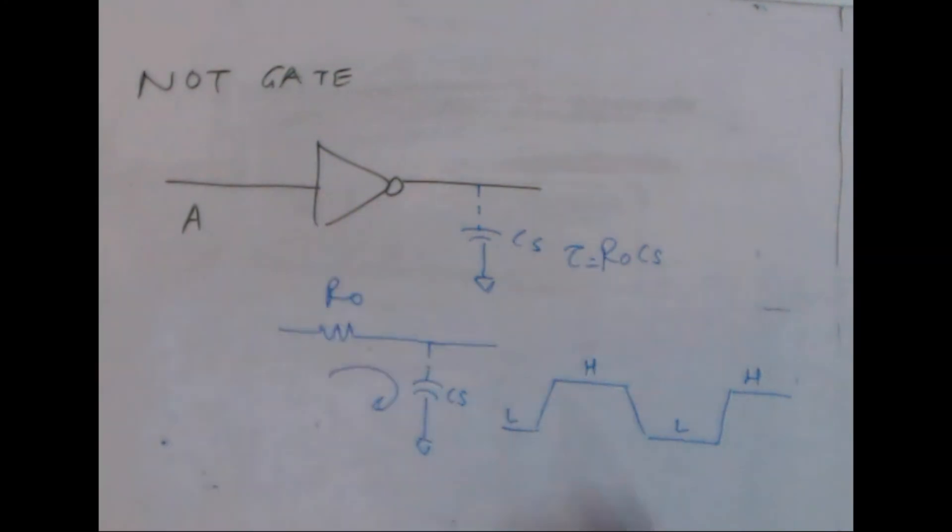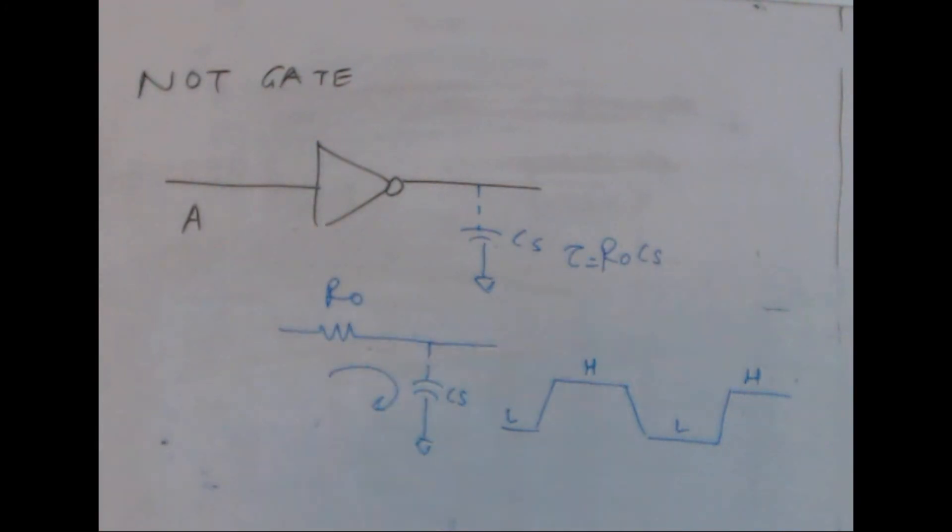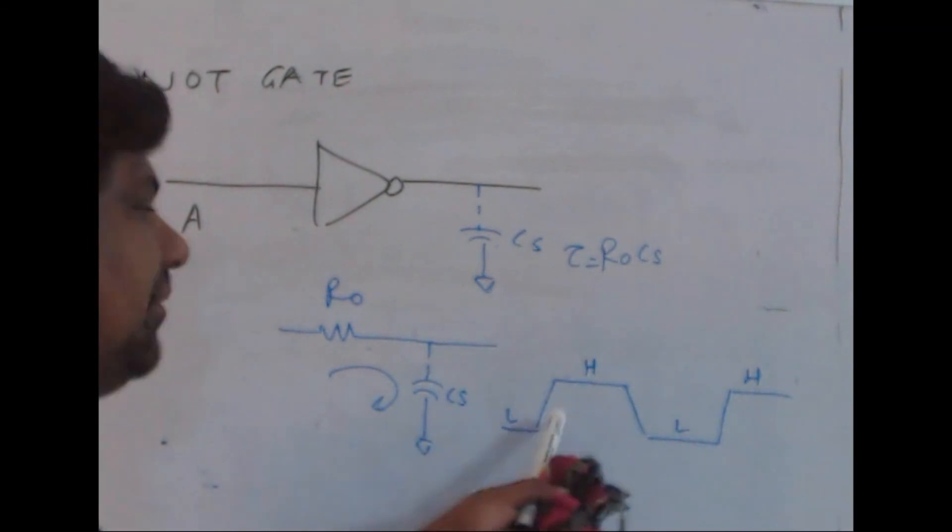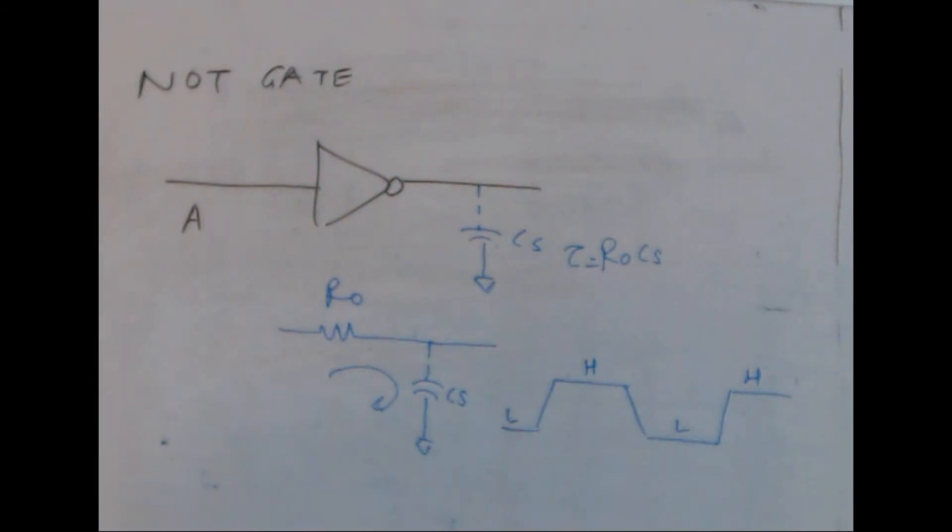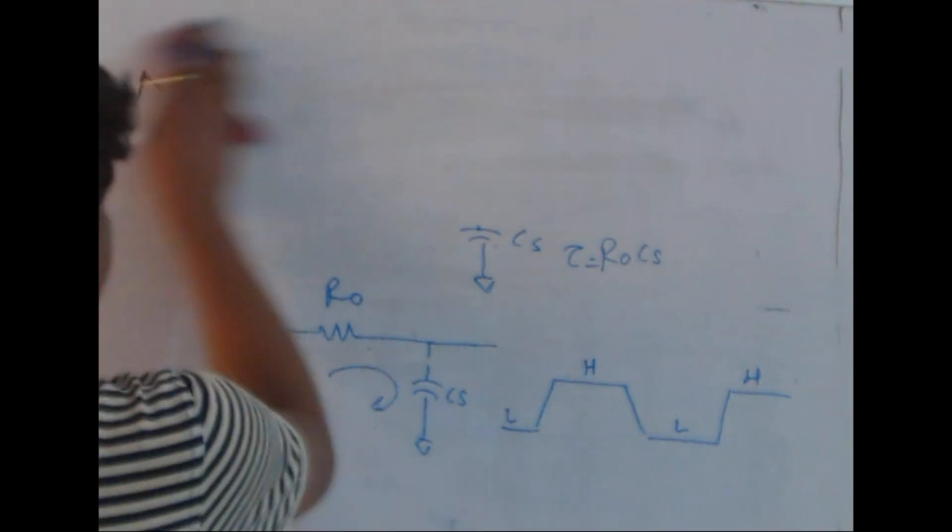This happens due to the presence of internal transistors and equivalent resistor at the output terminal. For every gate, we need to consider the practical output which has some sort of slew or rise time.